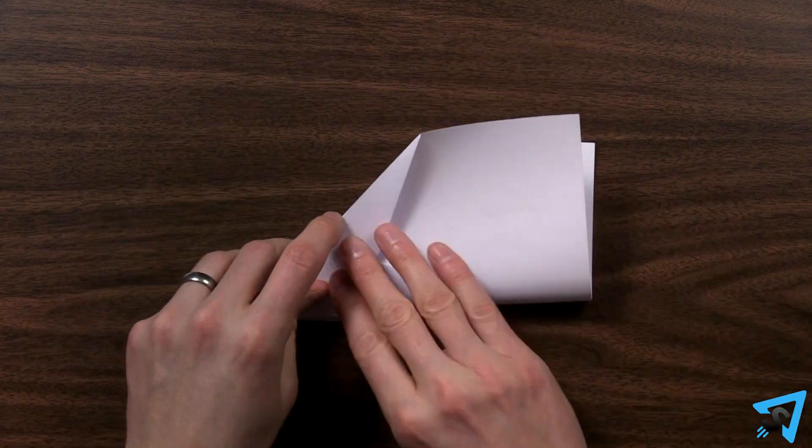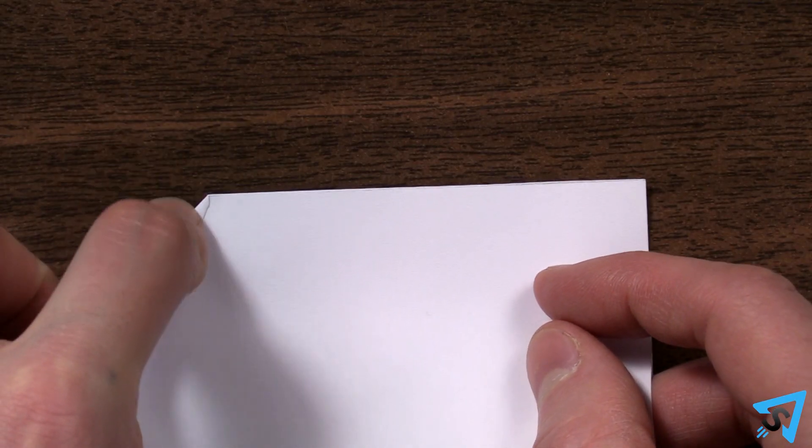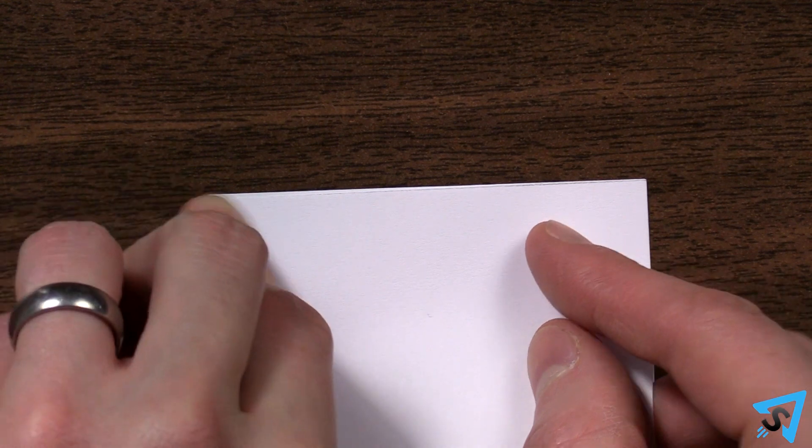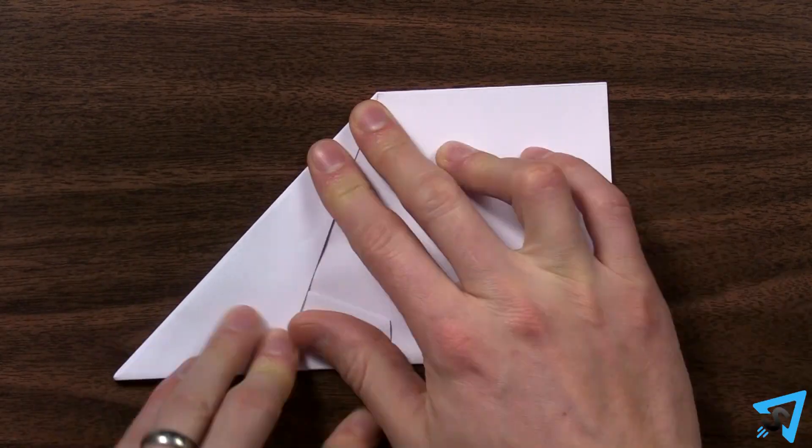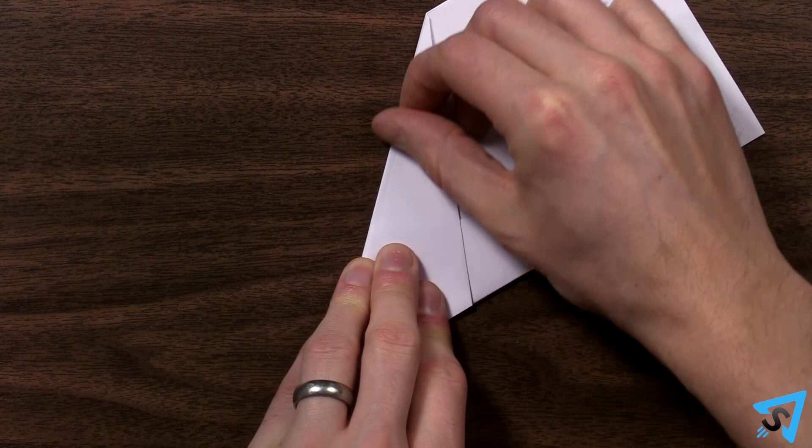Fold the plane in half away from you, lining up the nose and tail corners so they match perfectly. Crease the bottom of the plane, then sharpen all the creases.